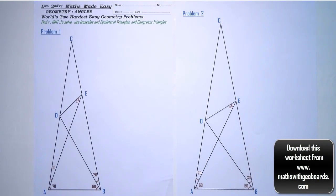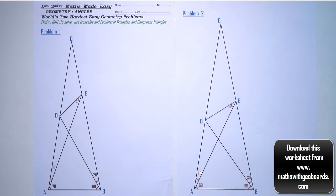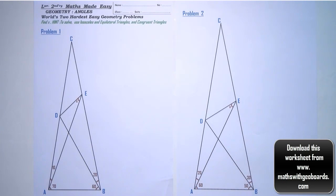They're called that because we're not allowed to use trigonometry to solve them. We must use isosceles triangles, equilateral triangles, and congruent triangles, and we could also use parallel lines if needed. I'd just like to review isosceles triangles, equilateral triangles, and congruent triangles before we start.